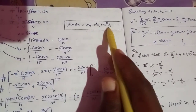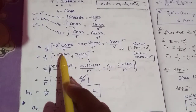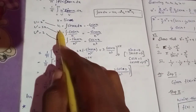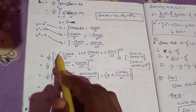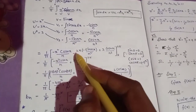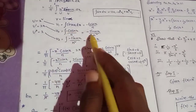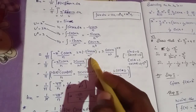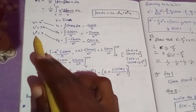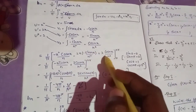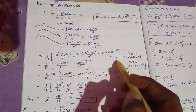We apply this for u = x². So the expression is: 1 by π times [minus x² cos(nx)/n, minus 2x times minus sin(nx)/n², plus 2 times cos(nx)/n³], evaluated from 0 to 2π.